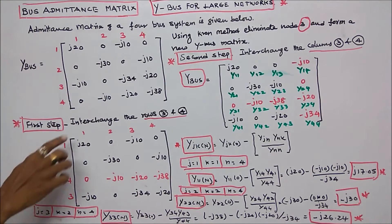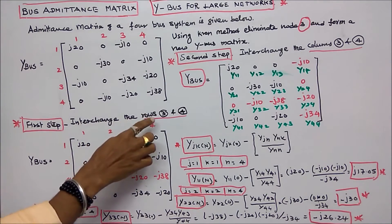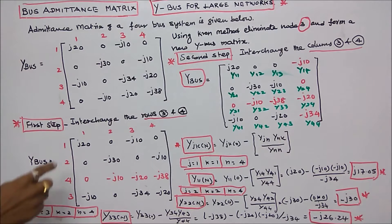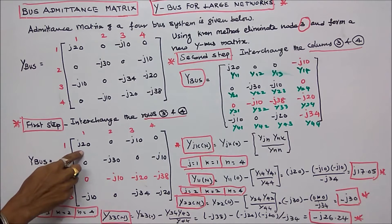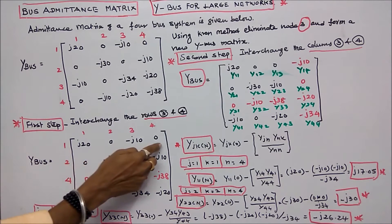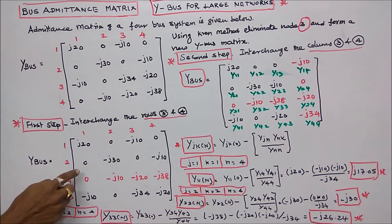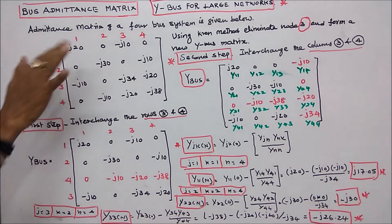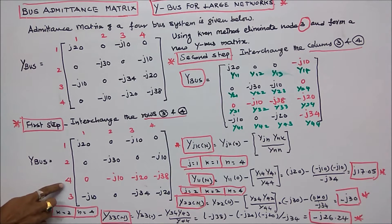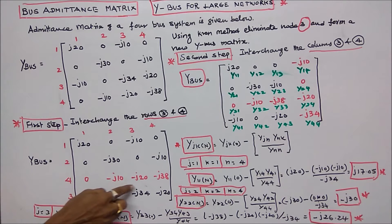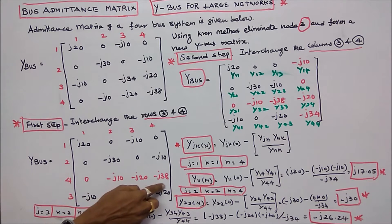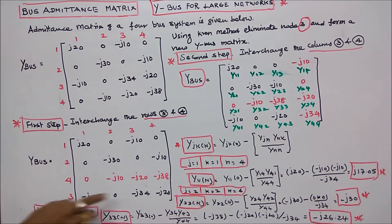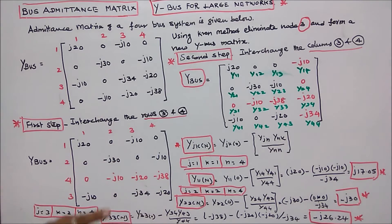First step: interchange rows 3 and 4. The first row is j20, 0, minus j10, 0. The second row is 0, minus j30, 0, minus j10. We have to interchange the rows. The third row becomes 0, minus j10, minus j20, minus j38. The fourth row is minus j10, 0, minus j34, minus j20.